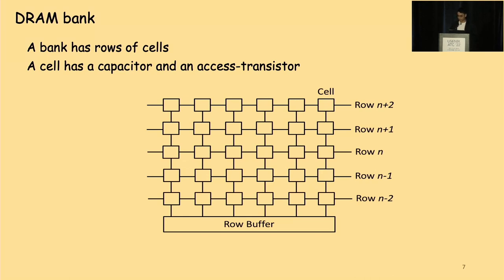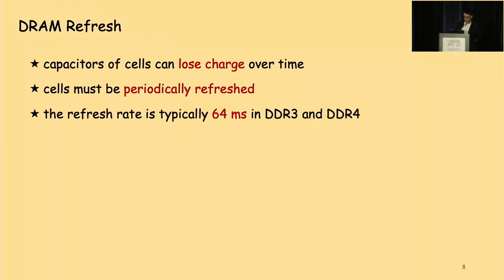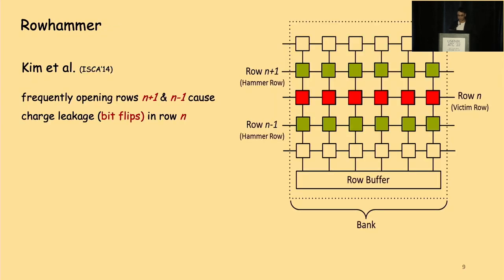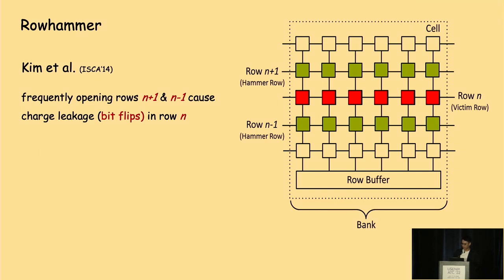The access transistor works like a switch, allowing or disallowing the cell's bit information to be read out to the row buffer. The capacitor of every cell loses charge over time, so cells must be periodically refreshed — typically every 64 milliseconds in DDR3 and DDR4. In 2014, Kim and his team observed that frequently opening rows N+1 and N-1 causes some cells in row N to leak charge at a much faster rate, so those cells cannot recover their charge even when a DRAM refresh comes. This implies that bits in victim row cells can be flipped from bit 1 to bit 0 or vice versa.